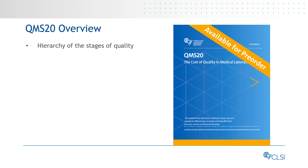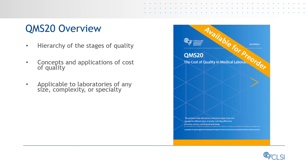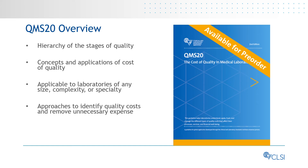This guideline presents a hierarchy of the stages of quality, synthesized from the concepts of acknowledged quality experts. It describes the concepts and applications of cost of quality as a dimension that is part of every quality level, and is applicable to medical laboratories of any size, complexity, or specialty, including point-of-care testing, or POCT. Other types of laboratories, such as public health, research, food, environmental, and veterinary laboratories, as well as other healthcare services, can also use the information in this guideline. This guideline provides an initial approach that laboratories can take to identify quality costs and remove unnecessary expense from laboratory processes.